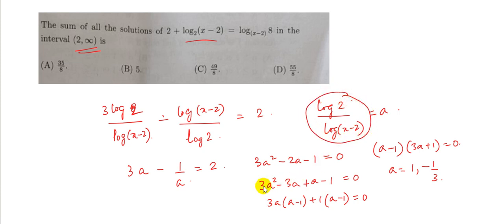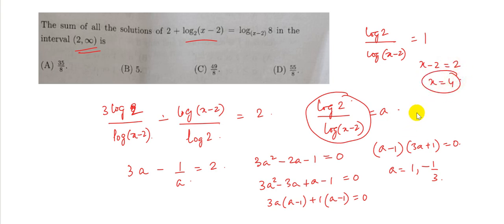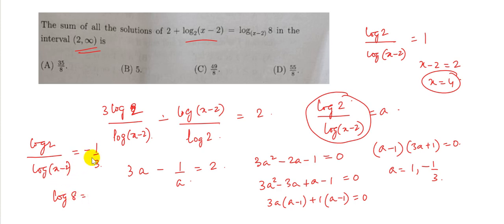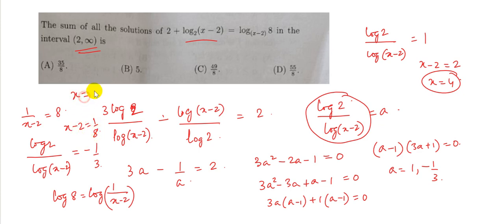Therefore a = 1 or a = −1/3. Since a = log 2 / log(x−2): for a = 1, log 2 / log(x−2) = 1 means x−2 = 2, so x = 4. For a = −1/3, we get 3 log 2 = −log(x−2), meaning log 8 = log(1/(x−2)), so 1/(x−2) = 8, giving x−2 = 1/8, thus x = 2 + 1/8 = 2⅛.